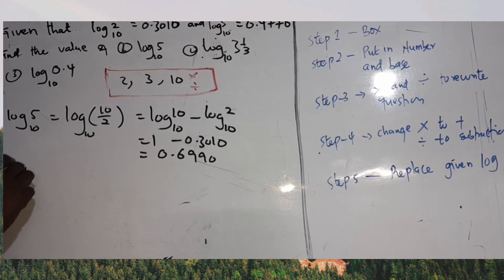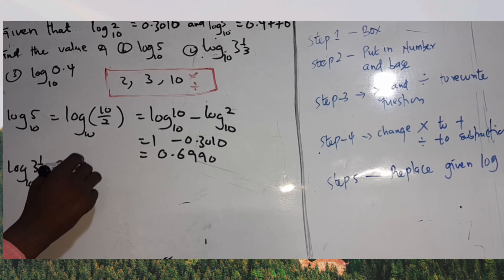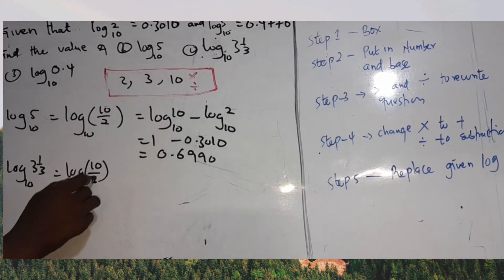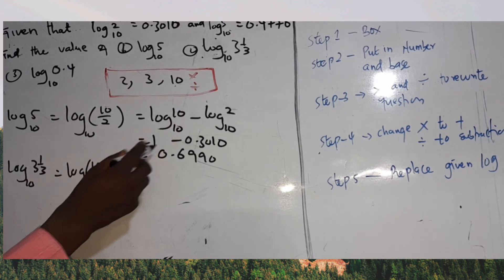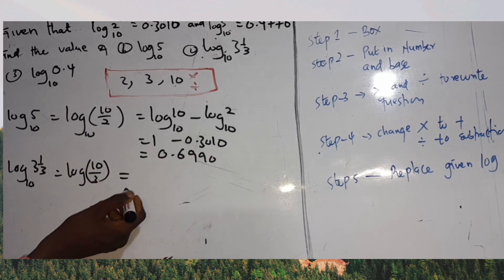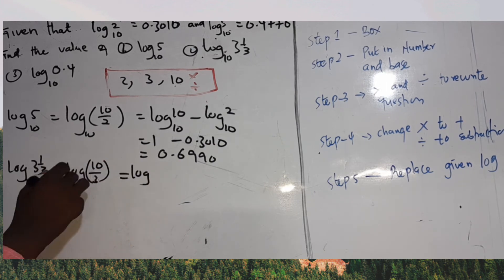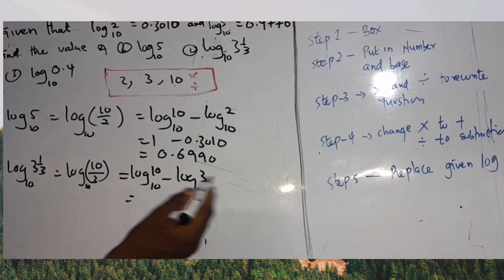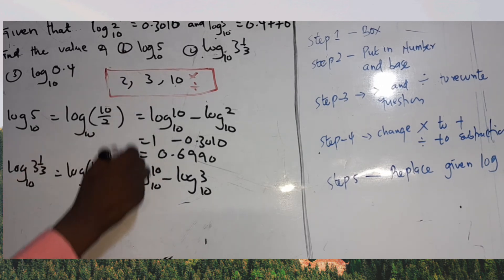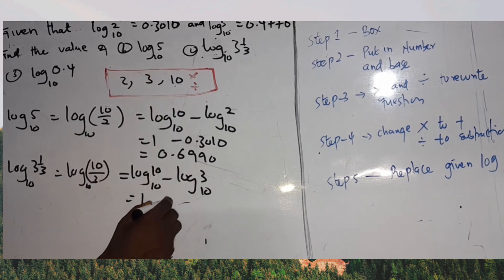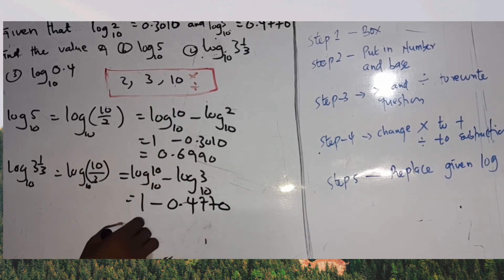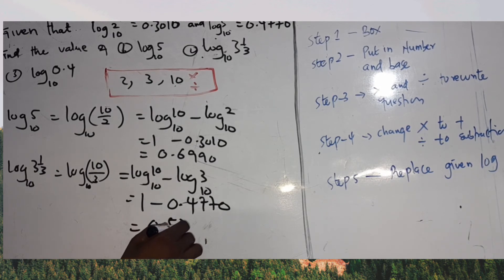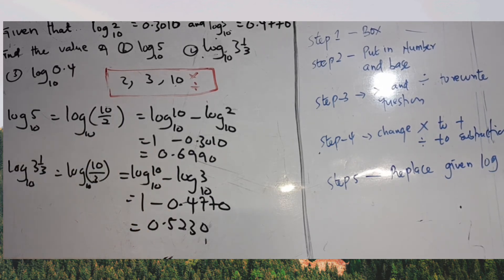Second question: log base 10 of 3⅓. Anytime you are given a mixed fraction, change it to an improper fraction first. 3⅓ equals 10/3. So we have log base 10 of (10 ÷ 3). Both 10 and 3 are in the box, so go to step 4: division becomes subtraction, giving log base 10 of 10 minus log base 10 of 3 = 1 − 0.4770 = 0.5230.